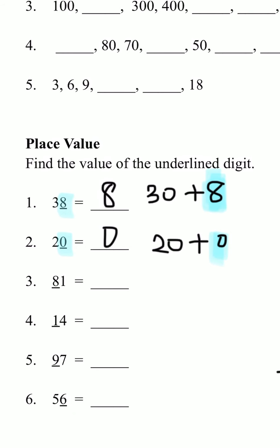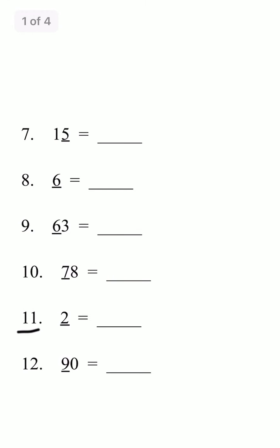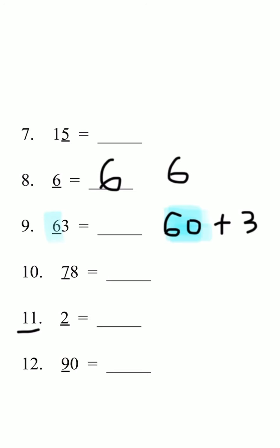For number 3, it's different. We have 8 underlined. 81 is 80 plus 1, and 8 is underlined, so that would be this one. So the value is 80. For number 8, we have only 6, so in expanded form it would also be 6, because it just has 6 ones, so the value would be 6. But for number 9, we have 63. 63 is 60 plus 3, and because the 6 is in the tens place, we're going to write 60 instead of 6.